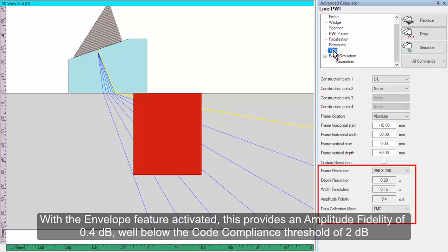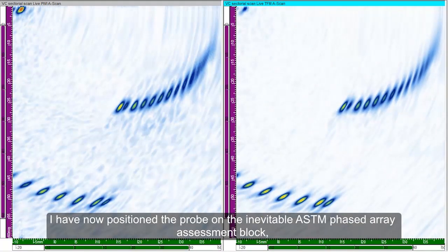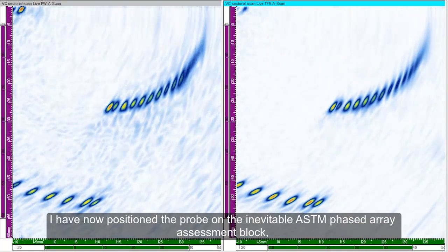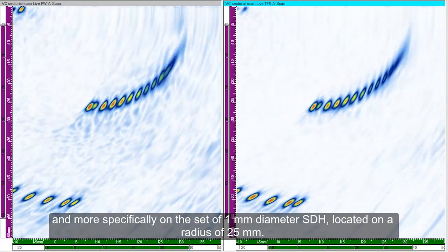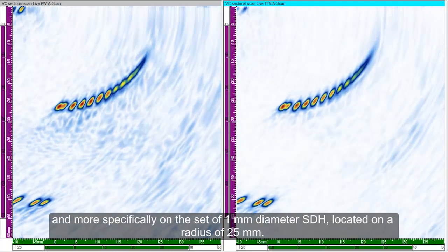I have now positioned the probe on the inevitable ASTM phased array assessment block, and more specifically on the set of 1 mm diameter side drilled holes located on a radius of 25 mm.